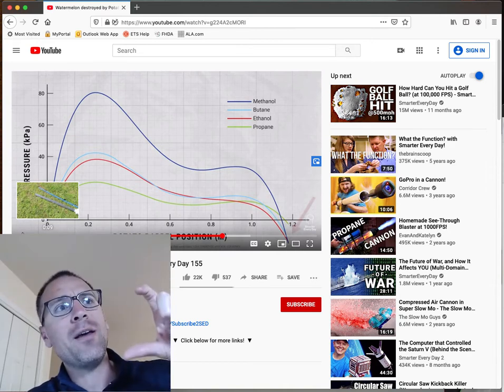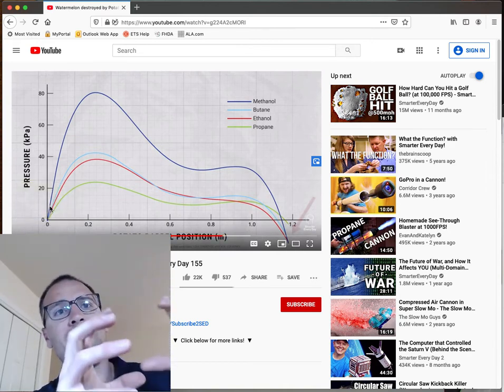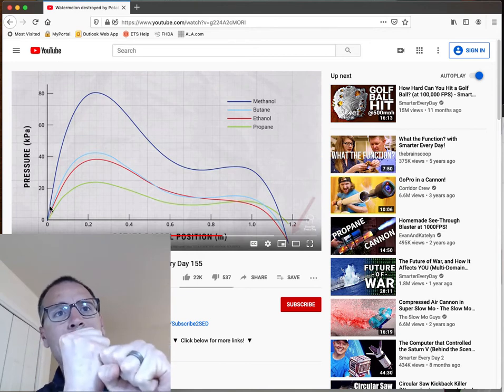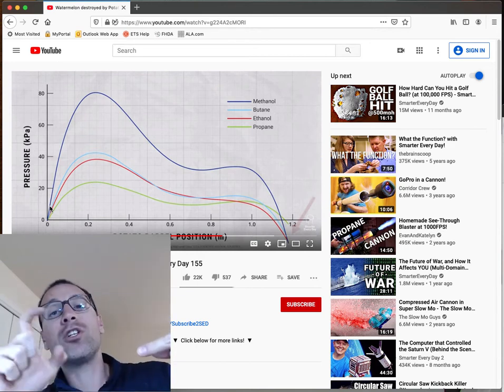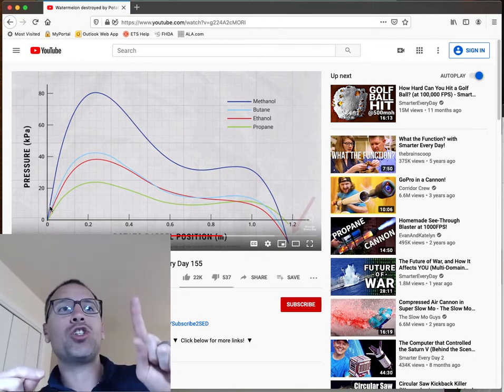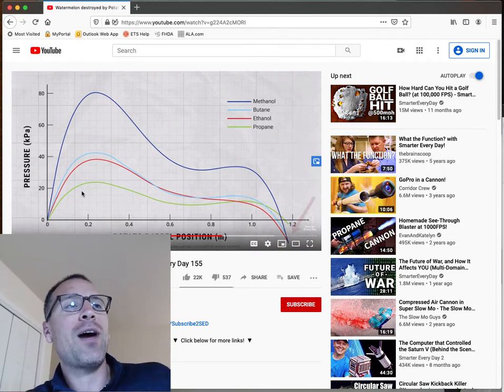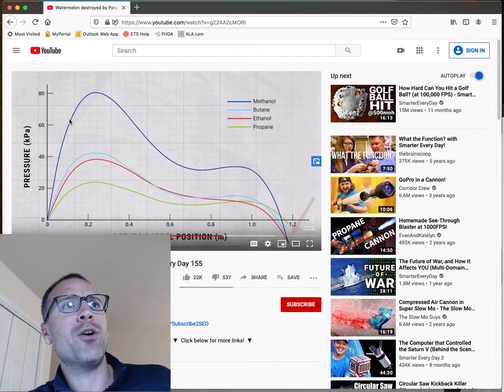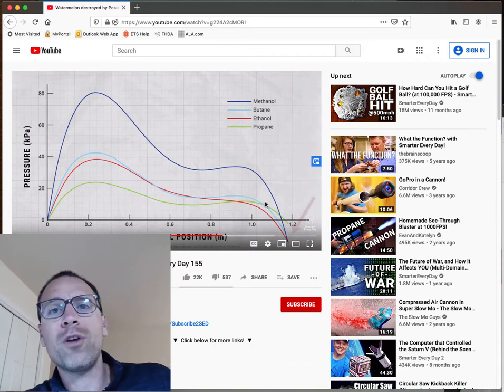This is a model of the potato barrel position versus the pressure inside that little gun. So if you go back and look at the gun that he constructed, it's kind of like a PVC pipe gun. And he stuffs a potato in there, puts some burnable fuel, lights the fuel, and the potato gets shot out. And it just so happens that as I was watching this video, I noticed that the behavior of this graph actually looks like a quartic polynomial, a fourth degree polynomial.